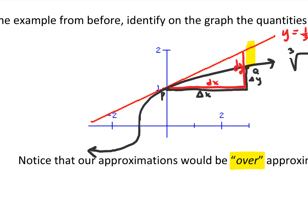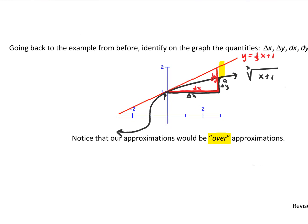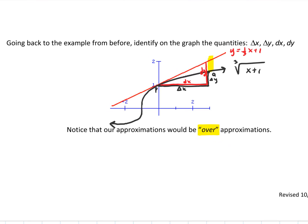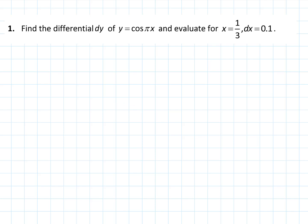Let's do an example with differentials. Find the differential dy of y equals cosine(πx) — that's cosine of pi x. Remember that the differential is equal to f prime of x times dx. That comes from dy/dx equals f prime of x — we think of this as a ratio, those physical changes on the tangent line.